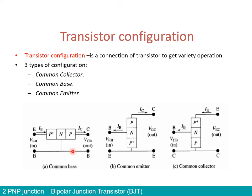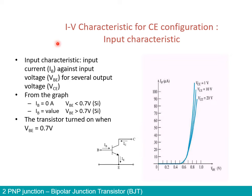The last configuration is what we call common collector — it is very rarely used and we're not going to look into it in this particular course. From now on, we're going to concentrate only on common emitter configuration. For this common emitter configuration, we're going to look at the current-voltage characteristic.